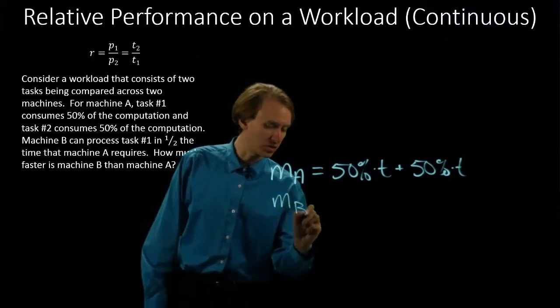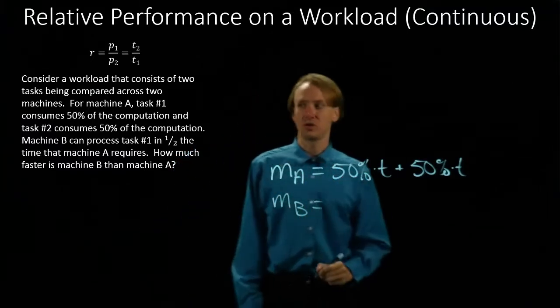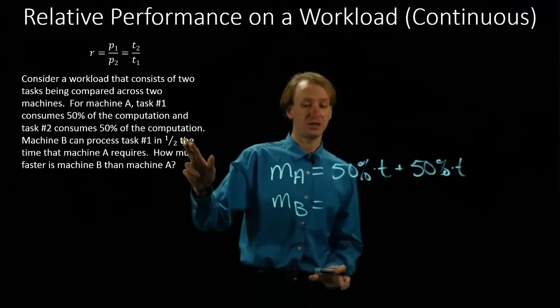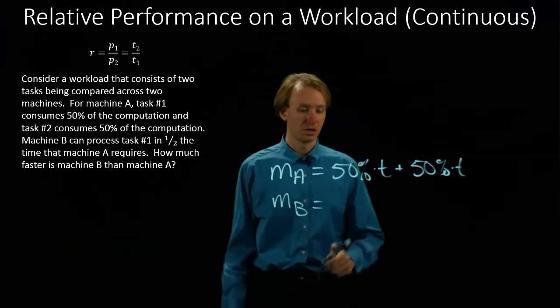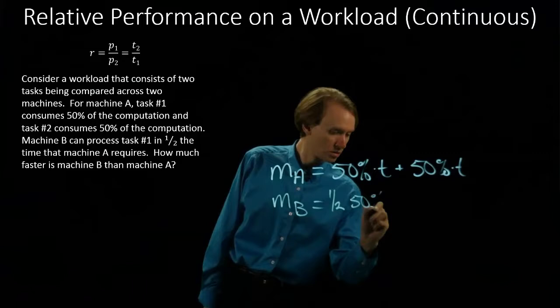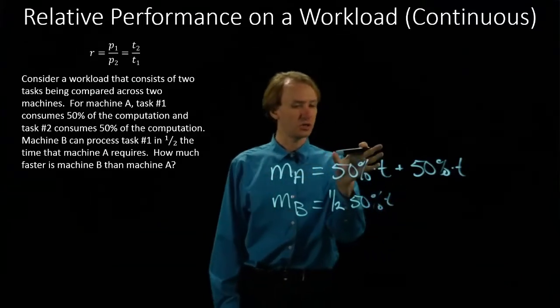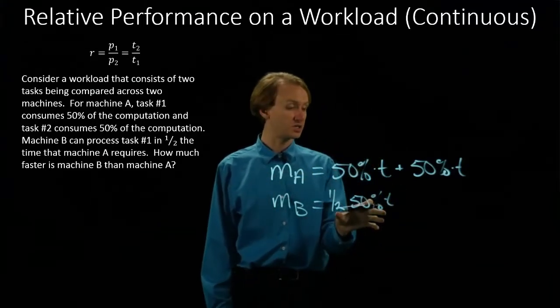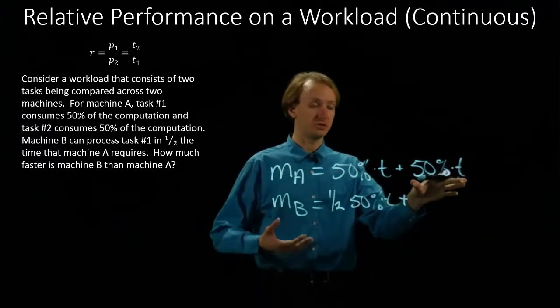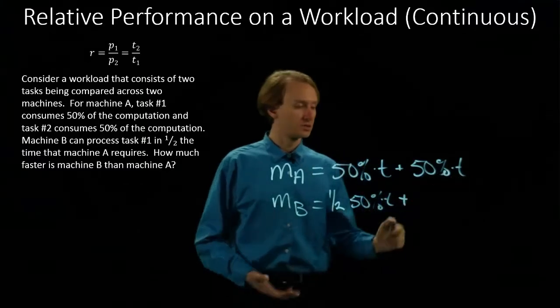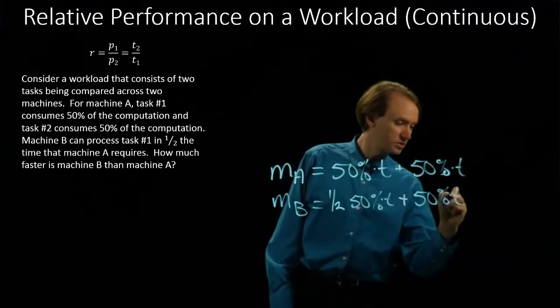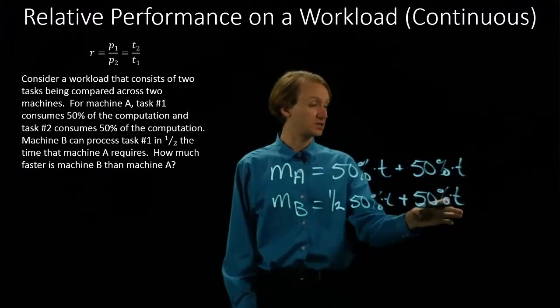Now, machine B is a little different. We know that machine B takes half as long to run the same amount of work that machine A did for task one. So it will do this same amount of work in half as much time. But it takes just as long to run task two. So we won't see any change there. We'll still be spending this same amount of time on task two.